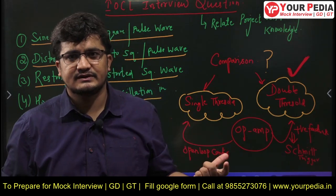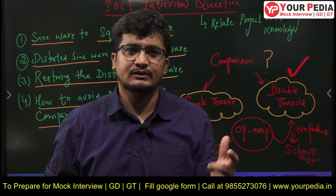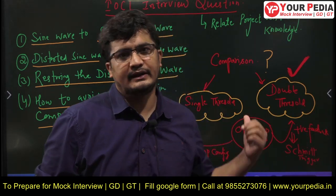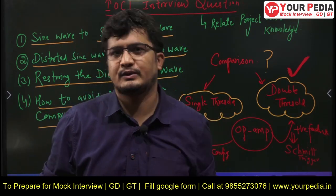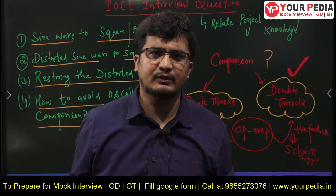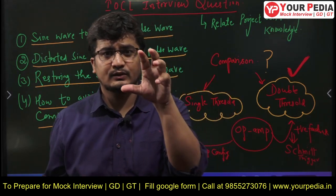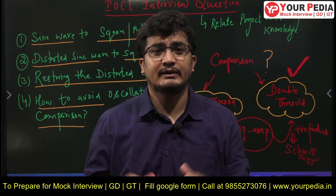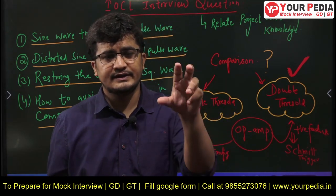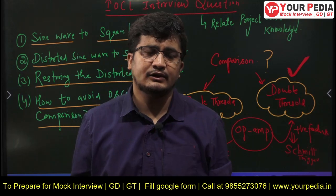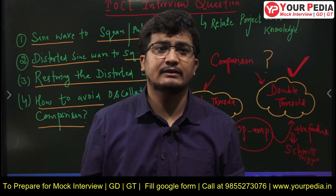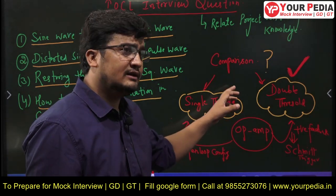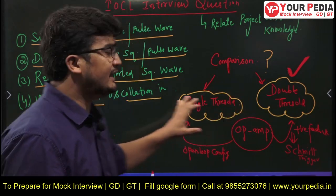Today I am here with one such question which was basically from control applications of street light with a comparator circuit. That was basically a project. The question was regarding the comparator circuit — how we do the comparison, what is the basic element for comparison, which device you will use for analog comparison. So whatever I am going to discuss here, that answer equally applies to all these questions.